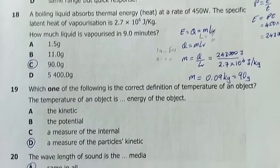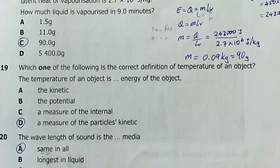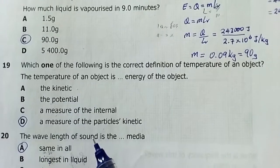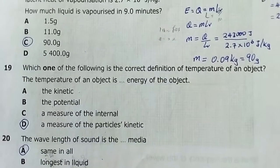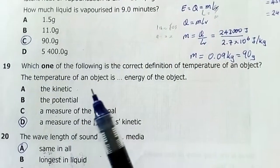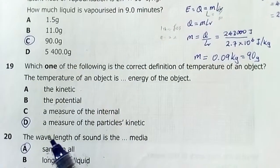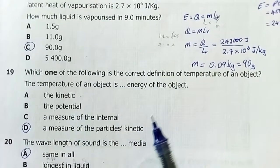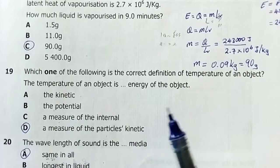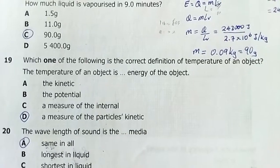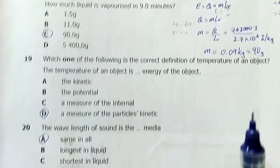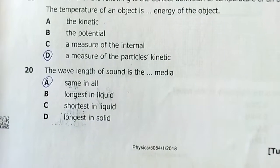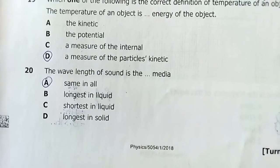Question 19: What is the correct definition of temperature of an object? Temperature is a measure of the average kinetic energy of particles in an object. Answer is D.